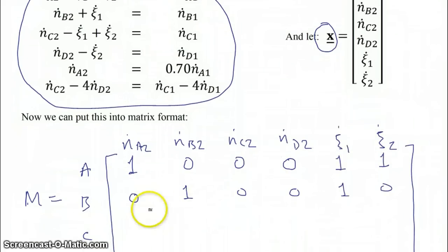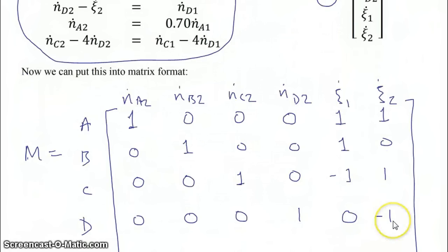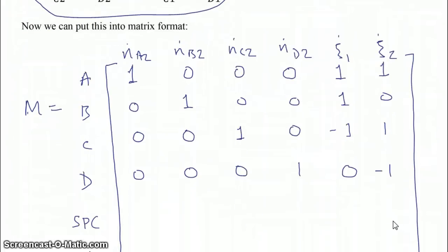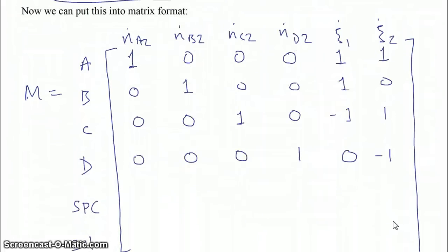For C, the coefficient for N dot C is 1, the coefficient for ξ1 is negative 1, and the coefficient for ξ2 is 1. And so on and so forth for D, and also for the single pass conversion and the selectivity equation.